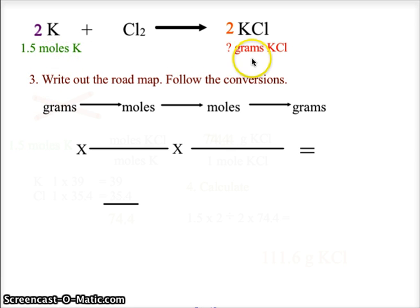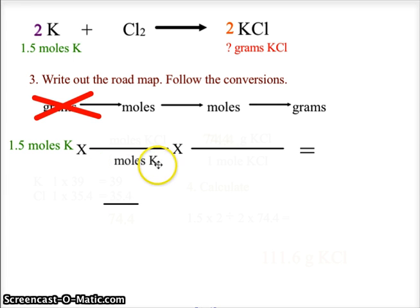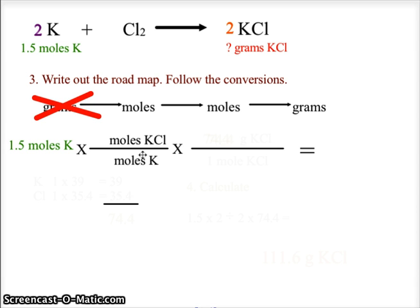In this question we're not starting with grams — we're starting with moles and going to grams — so we eliminate the first gram step and start at moles. Therefore we do two conversions, with two fractions. We begin with 1.5 moles of potassium, then divide by moles of potassium to cancel it, and put moles of potassium chloride on top using what is called the mole ratio, which lets us convert between substances.